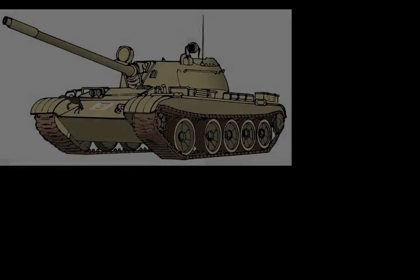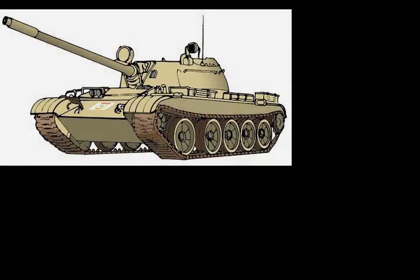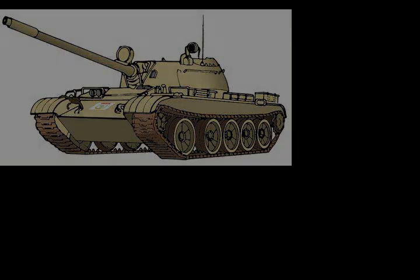The GOC Western Command, General Harbakesh Singh, favoured launching the campaign from Dera Baba Nanak using the 1st Armoured Division. But he was overridden by the Chief of Army Staff, General J. N. Chowdhury, who created a new I Corps under the command of Lieutenant General Pat Dunn for the purpose. It would operate from Samba.